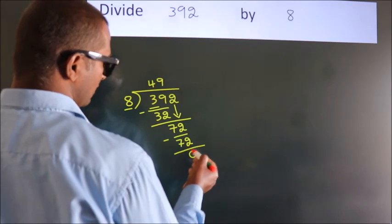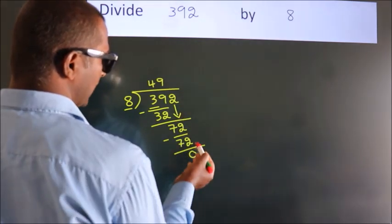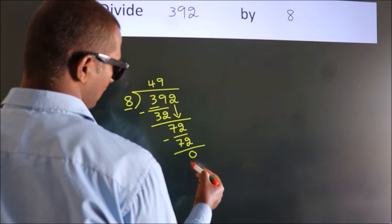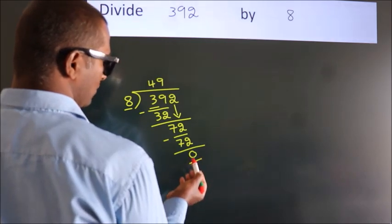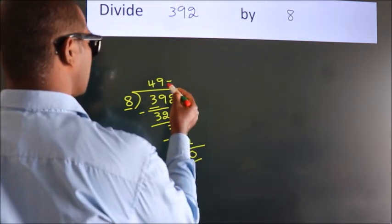After this, no more numbers to bring down. We got remainder 0, so this is our quotient.